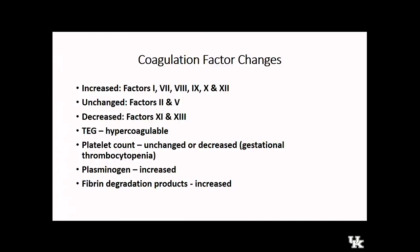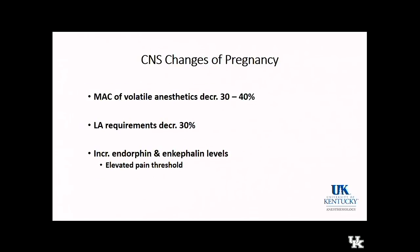Regarding other coagulation parameters, platelet count is generally unchanged, though a small percentage of women have gestational thrombocytopenia — rarely below 100,000. Plasminogen is increased and fibrin degradation products are actually increased in pregnancy. In terms of CNS changes, the MAC of volatile anesthetics is decreased by about 30 to 40%, and peripheral nerves have increased sensitivity to local anesthetic, both thought to be related to elevated progesterone levels, which have a depressant effect on the CNS.